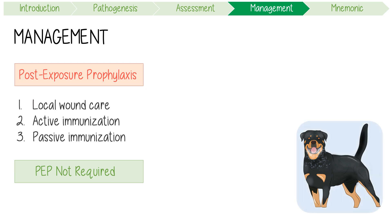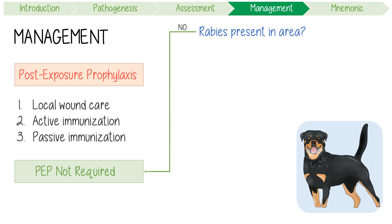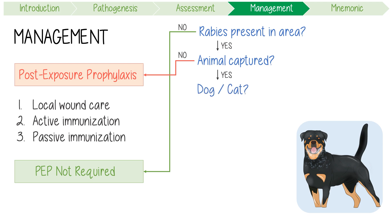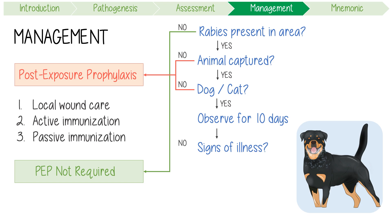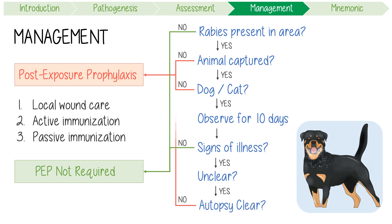If bitten by an animal but rabies is not present in the area, prophylaxis is not needed. If it is present and the animal was not captured, you should get prophylaxis. If the animal is caught and behaving normally — like a dog or cat would — observe it for 10 days. For other animals like a bat, prophylaxis is required. If the animal shows no signs of illness in this period, prophylaxis is not needed. Otherwise, or if unsure, the animal should be sent for examination, and if a positive result comes back, prophylaxis is required.